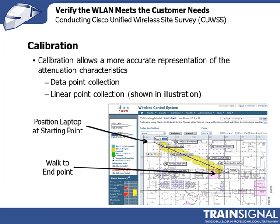Once data collection is complete, the Cisco Wireless Location Appliance will analyze all of that data to understand the RF propagation and location characteristics. It will then display a map showing all the RSSI readings, and you'll get a measure of location quality — that is, the ability for the location appliance to find the device within 10 meters 90% of the time.